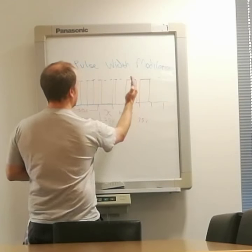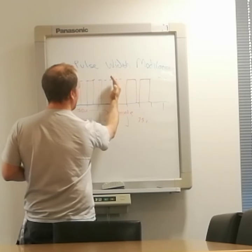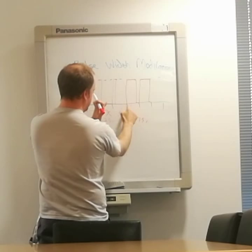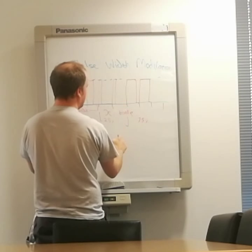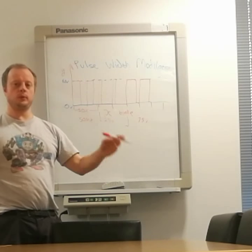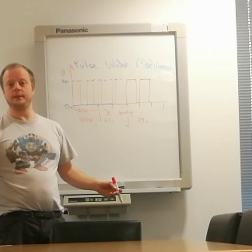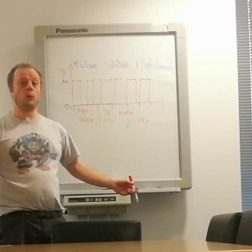And so by varying where that line in the middle of that period crosses from voltage to zero, you vary how much voltage your motor is getting, and therefore what speed it's turning.